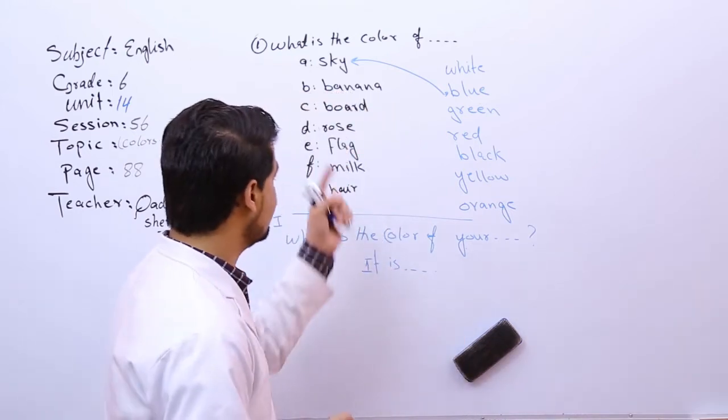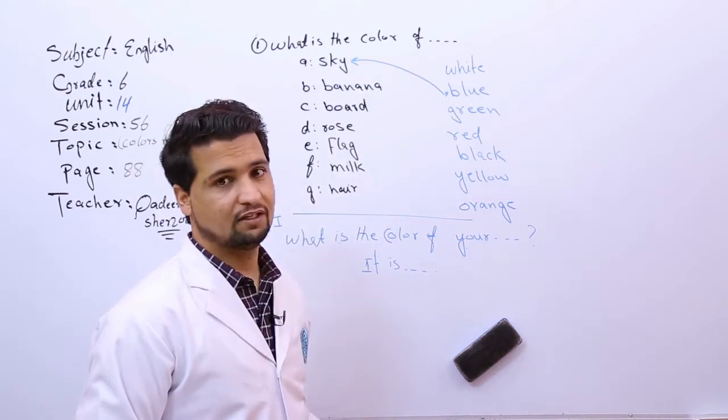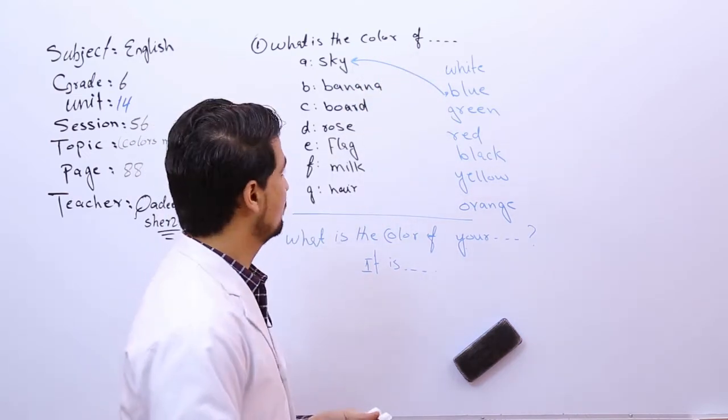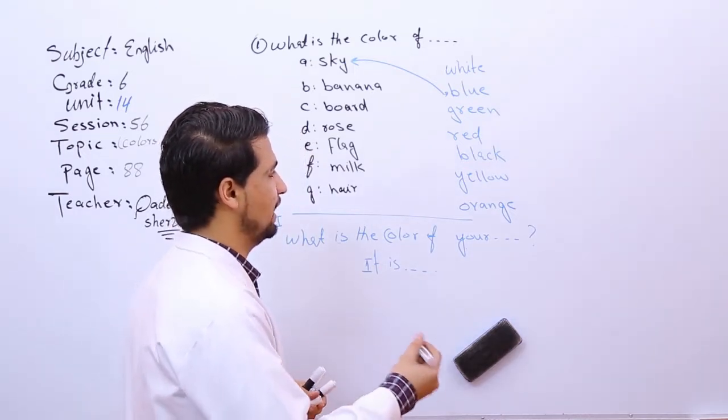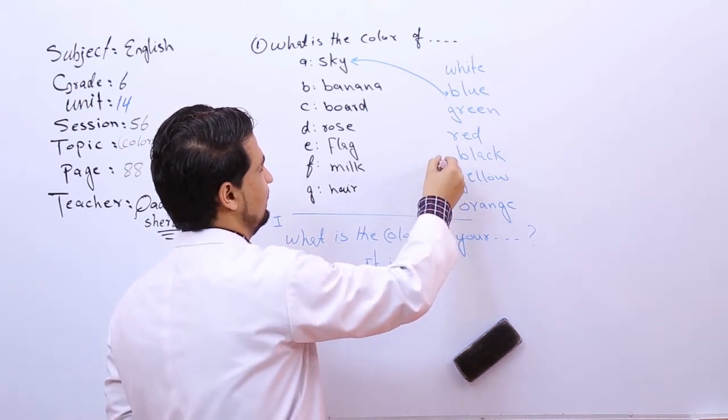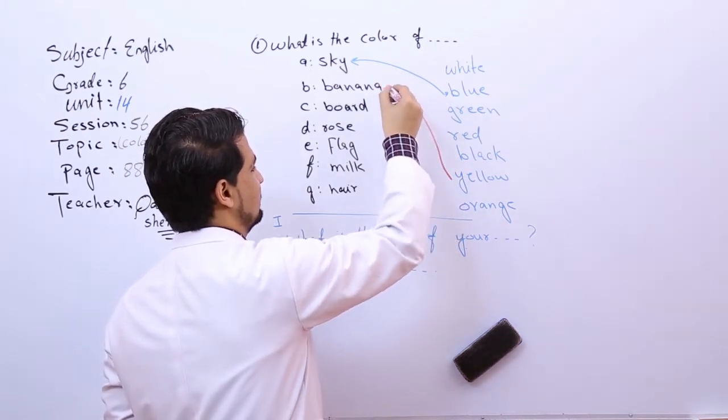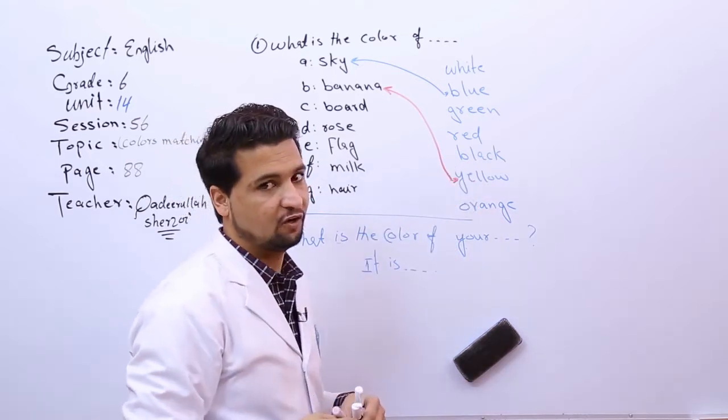What is the color of banana? The color of banana is what? Black, red, green, white? No, the color of banana is yellow, very good. The color of banana is yellow.